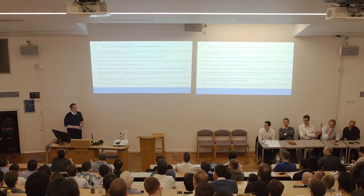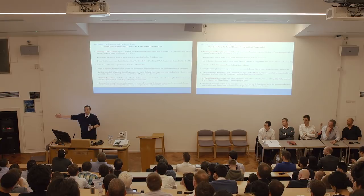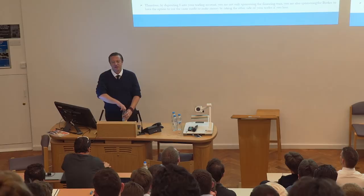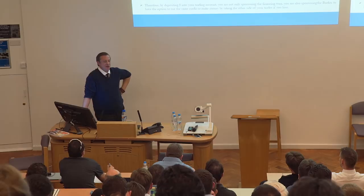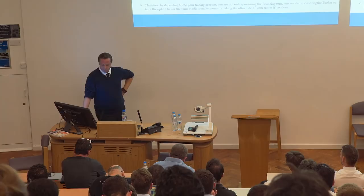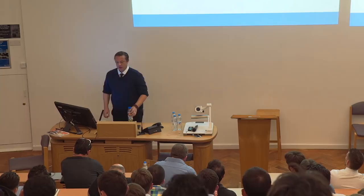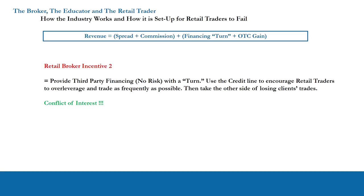Of course, if 90% of clients lose money and you want to take the other side, you want to borrow as much as possible. So you lend out as much as possible and teach people to trade as frequently as possible in the biggest size possible — you take a point on the financing, then get the gain on the other side when they lose. The retail broker incentive is to provide third-party financing with little risk, take a financing turn, and use the credit facility to encourage retail traders to trade frequently in the biggest size possible, taking the other side of all the trades.